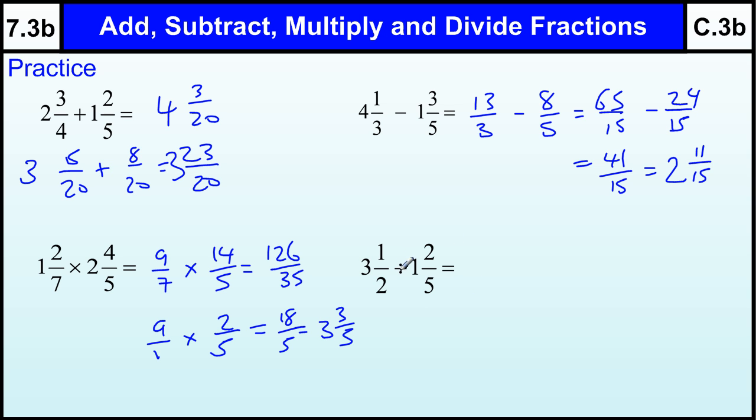Then we've got 3 and a half, which is 7 over 2, divided by 1 and 2 fifths, which is 7 over 5. Which is 7 over 2 times 5 over 7. Remember dividing by a fraction is the same as multiplying by its reciprocal, that's when you turn it upside down. And again we can cancel the 7s to leave us with 1 times 5 is 5 and 1 times 2 is 2. Or you could get 35 over 14 and then divide by 7 to get 5 over 2. That's 2 and a half.